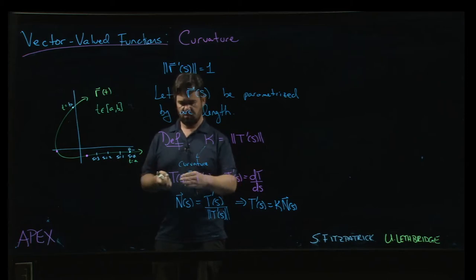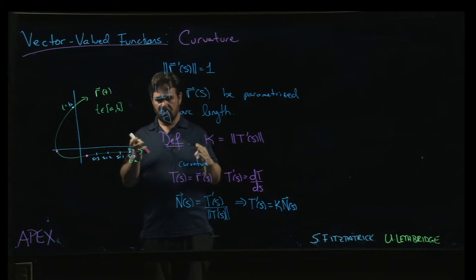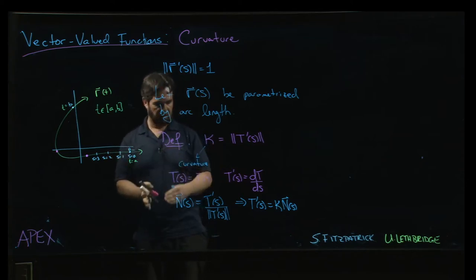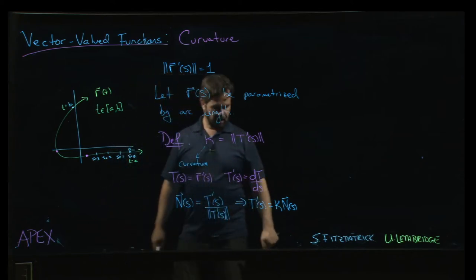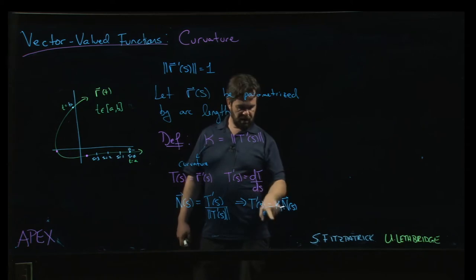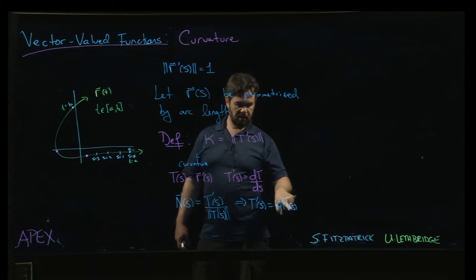Since N is a unit normal, it has constant magnitude. The magnitude of T prime is controlled by the curvature. The greater the curvature, the more your direction is changing.